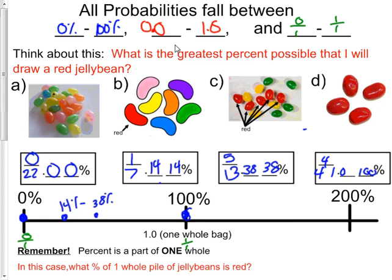So things to watch out for. Probabilities cannot be above 100 percent. Probability cannot be above one whole. And probability cannot, as a fraction, cannot be a mixed number. So like 3 over 1 would not be possible. It has to be less than one whole.